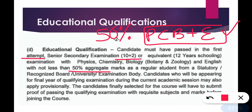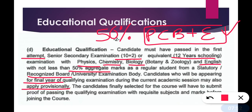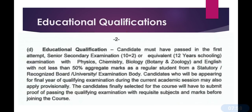The qualification required is 12th or equivalent, with Physics, Chemistry, Biology, and English from a recognized board or university. Students who will be appearing for their final year qualifying examination can also apply for MNS 2021 provisionally. When you fill the application form, if you don't yet have your 12th roll number or mark sheet, you can select provisionally. So 12th appearing students can definitely apply for MNS 2021.